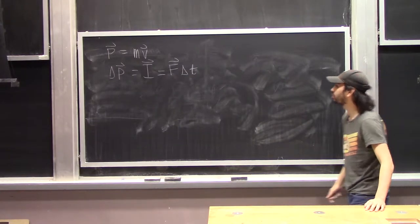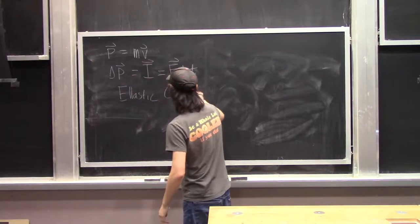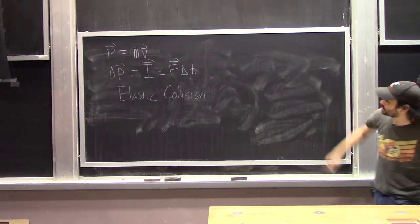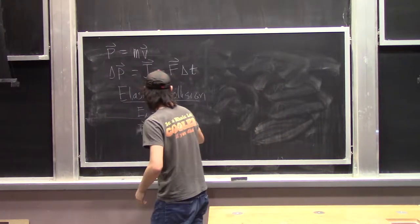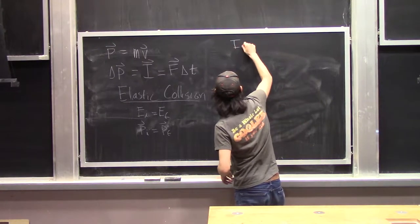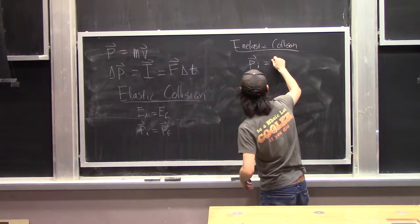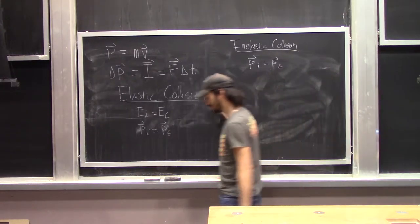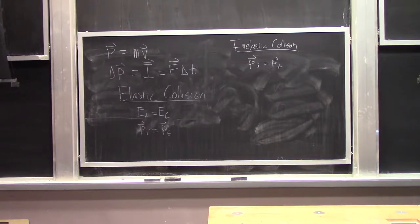We have two types of collisions. The first is the elastic collision, in which both energy and momentum are conserved — the initial energy equals the final energy, and the initial momentum equals the final momentum. In the inelastic collision, only momentum is conserved and energy is not. Over the course of today's class, we'll see examples of these collision types and use these equations to solve for unknown quantities such as a final velocity.